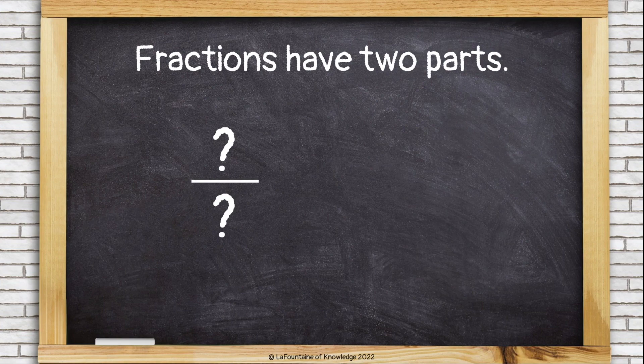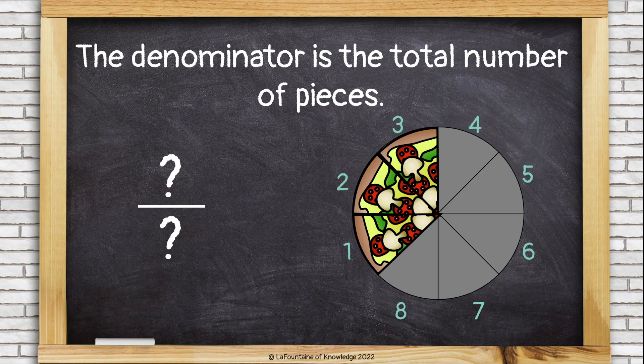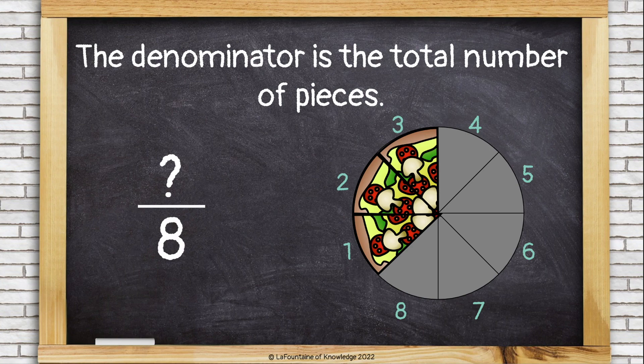Fractions have two parts, the numerator and the denominator. The denominator is the total number of pieces. So in this example, that's eight. I had eight total pieces of pizza.